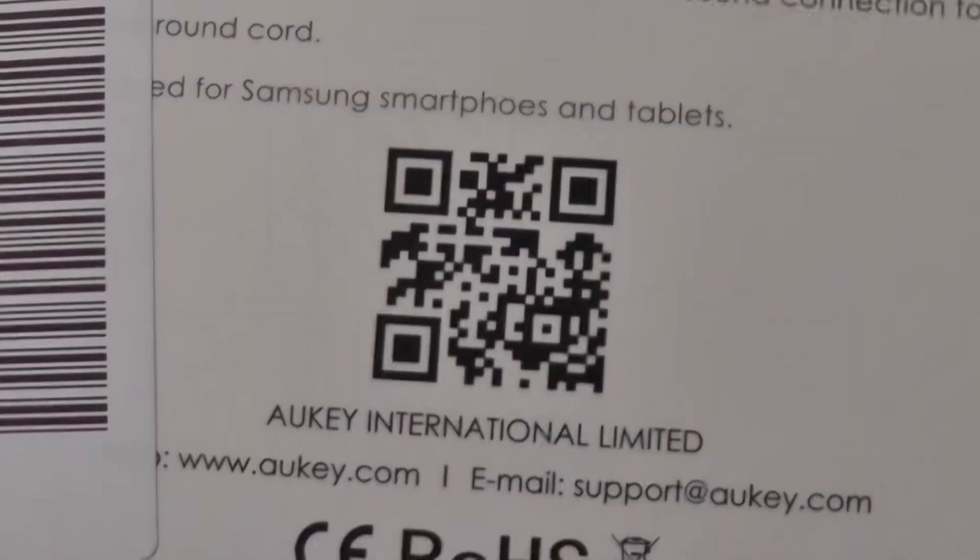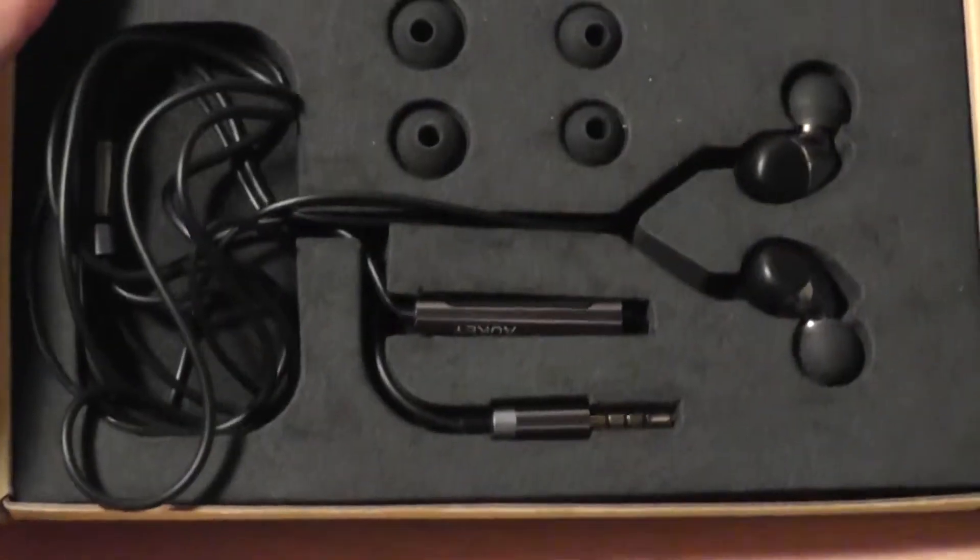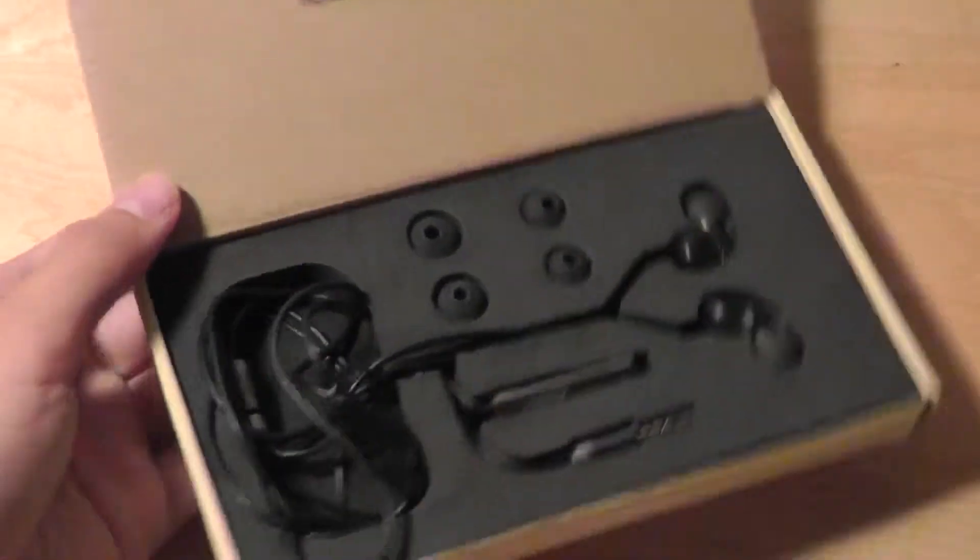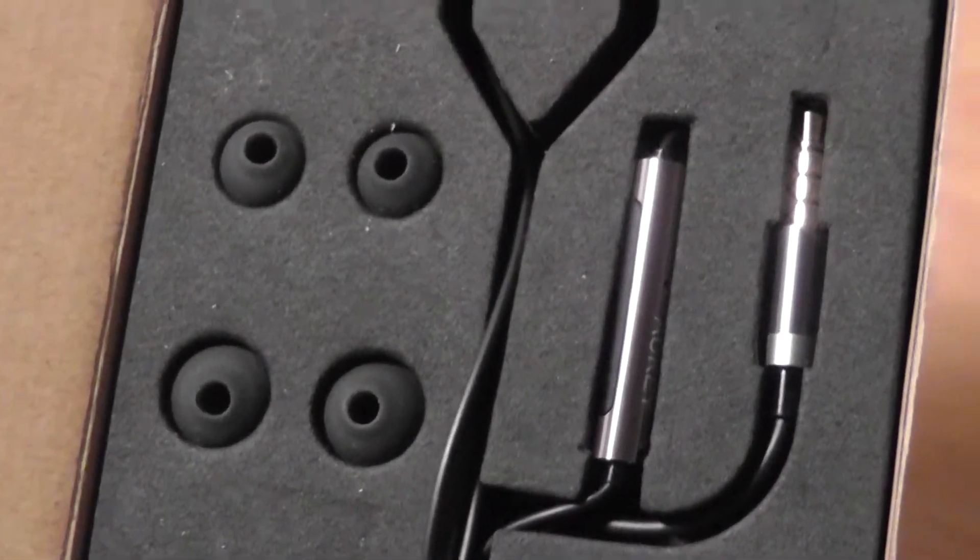Taking a look at the packaging, you have a pretty simple design. You have the QR code on the back to learn more information about the unit, and inside you have the earbuds themselves. There's a very good presentation from the manufacturer with the earbuds lying right on top and the adjustable gel tips that you can change.